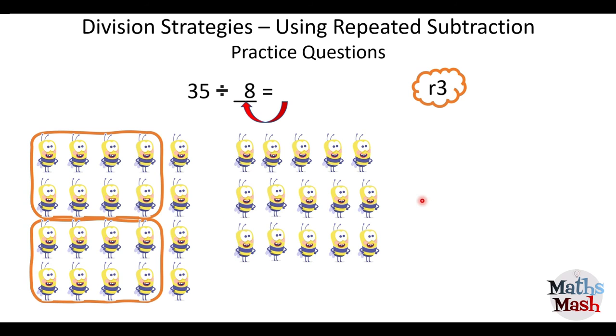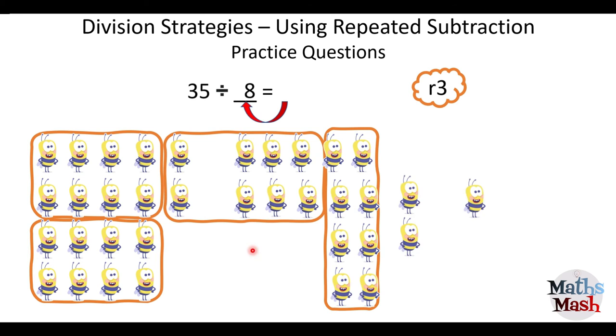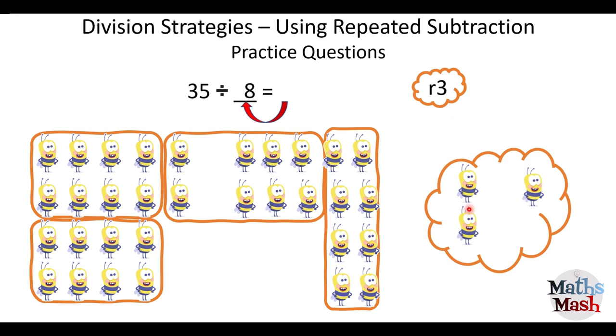So there's two groups, three groups. Move these two over here. That's four groups of eight. One, two, three, four. And I've got these three remainders. So I'm going to move those over. And that's our remainder three. All right. So that means I've got four groups.